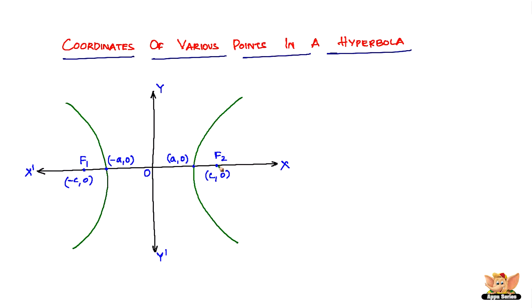The vertices are given by (−a, 0) and (a, 0). So these are the coordinates of various points in a hyperbola.